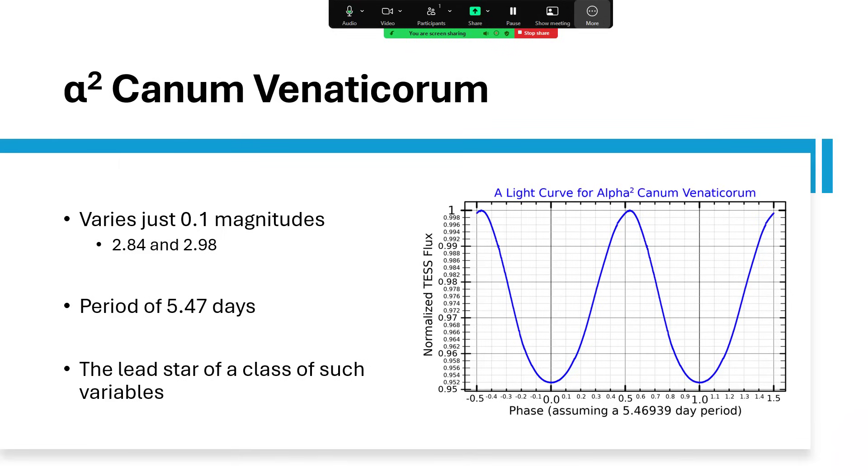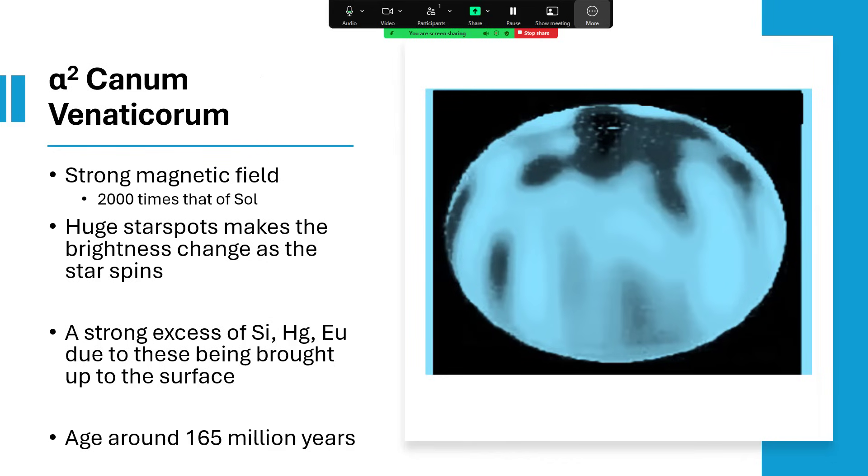You'll notice that the period is 5.46 days, very suspiciously similar to the star's rotation period. We know these types of stars have very strong magnetic fields, around about 2,000 times stronger than the Sun, and they get covered in huge star spots. These star spots cause a variation in the luminosity as they rotate around. So maybe that rotation period, the star spots, and the light curve are all getting a little bit mixed together there.